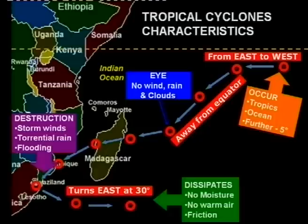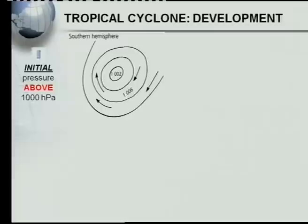Those are all the characteristics of the tropical cyclone. We must also know the development of tropical cyclones. Just as we looked at the stages of the mid-latitude cyclone, we have the tropical cyclone in its different stages. There are four stages. To identify each stage, there is only one thing you look at: the air pressure. Your key here will be a thousand hectopascals — it's quite easy to remember.